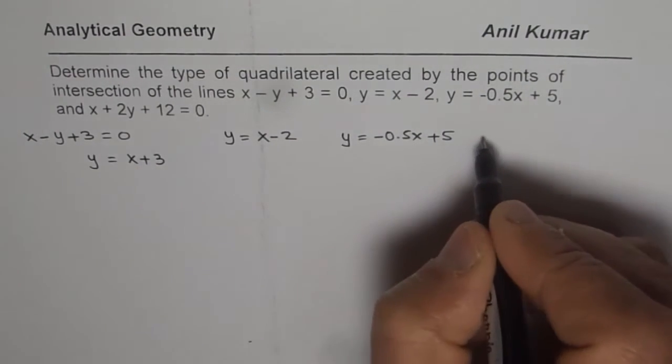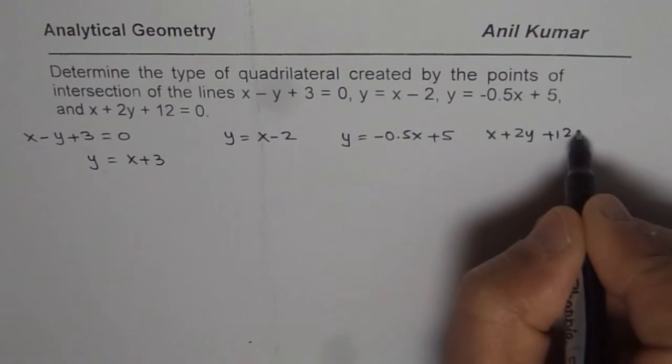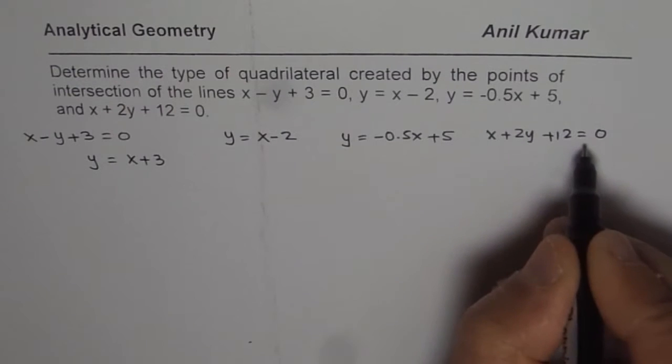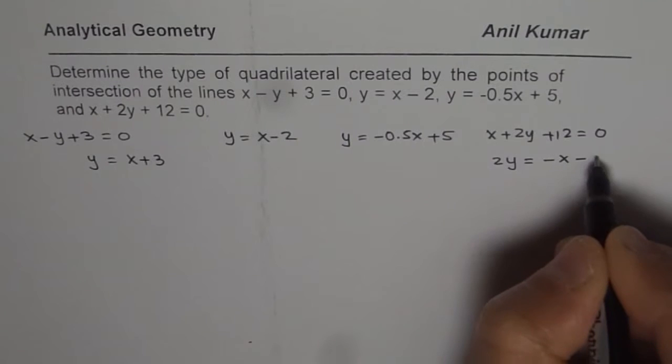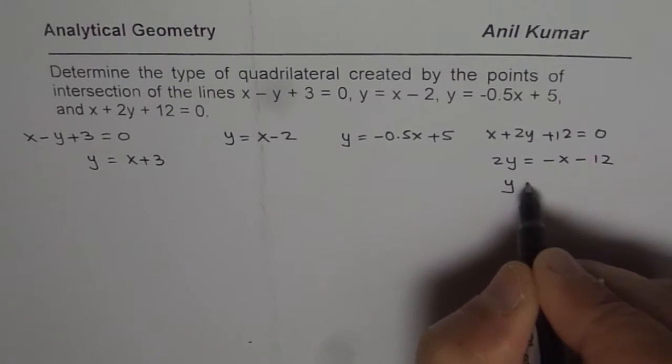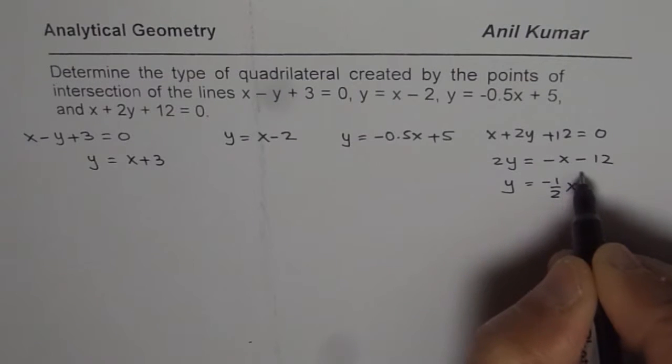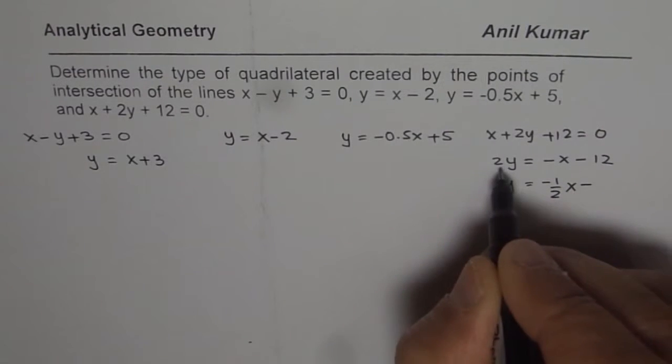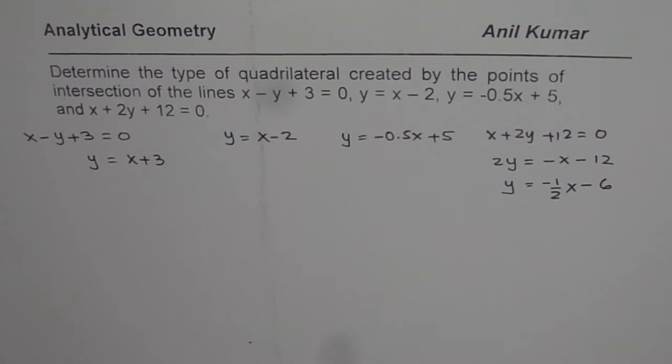And the fourth one here is x plus 2y plus 12 equals 0. So let us rearrange, we get 2y equals minus x minus 12, or y equals minus half x minus 6. That is the third line.